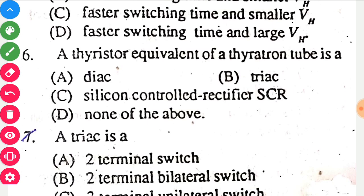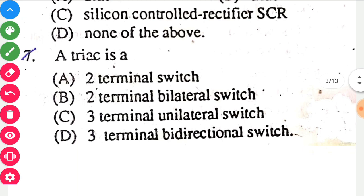The next question: a thyristor equivalent of a thyrotron tube is a — thyrotron tubes were invented for controlled switching, and in modern power electronics we call it SCR. So option C is the correct option: Silicon Controlled Rectifier, SCR.